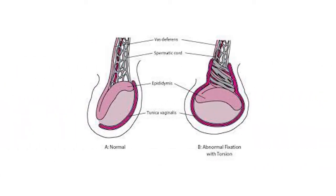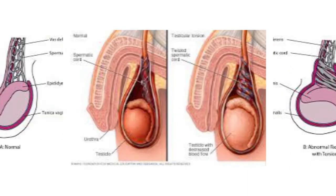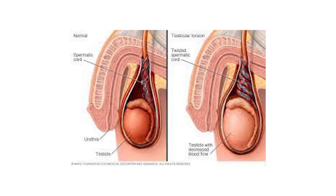Here is a picture showing the normal testis and abnormal fixation with torsion. The spermatic and testicular blood supply is shown fixed, with torsion present. An animated picture shows torsion with decreased blood supply, depicting the rotation and malrotation of the testicular arterial and venous system.